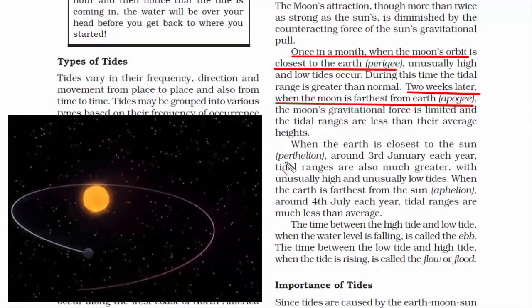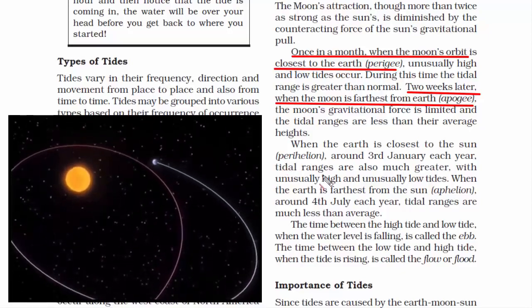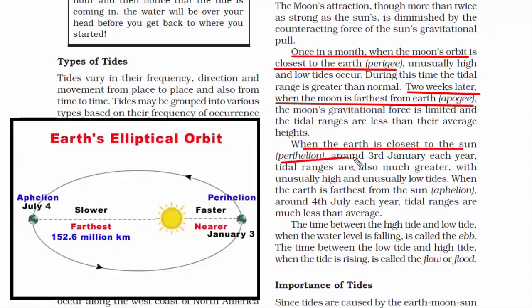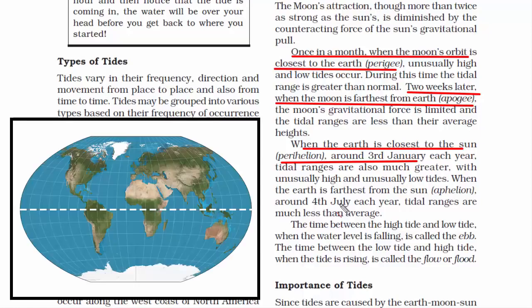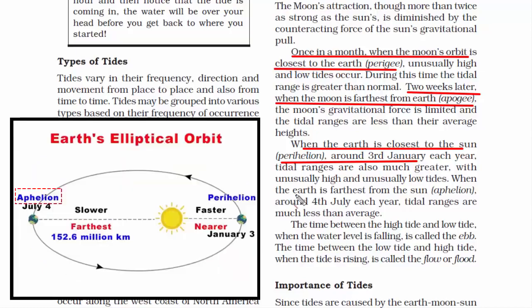Earth's orbital pattern around the sun is elliptical. When the earth is closest to the sun, which is on January 3rd, it is called perihelion. During perihelion there are high tides, and it is also super hot in the southern hemisphere. During January, the northern hemisphere witnesses winter, and since the southern hemisphere has less land mass compared to the northern hemisphere, the oceans there will have unbelievably high tides. On July 4th, the earth is farthest from the sun — this is called aphelion — and during this time, tidal ranges are much less than average.